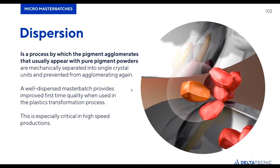Going back to the process of dispersion: how does a masterbatch manufacturer disperse the pigment agglomerates during the manufacturing process of a masterbatch? I have a 3D video that explains this, which I am going to run now.